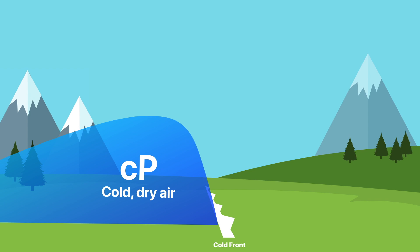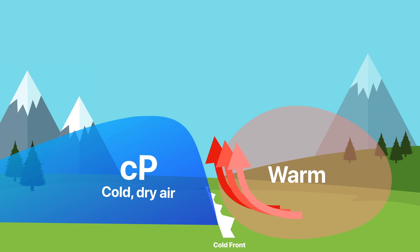We don't know much about the surrounding air, but we can assume that it's going to be warmer than the cold air within the CP air mass. Warm air is less dense than cold air. So when that CP air mass plows its way along, the warm air ahead of it has nowhere to go but up. That warm air is going to be forced to rise, and in many cases at a cold front, it's going to be forced to rise quickly.